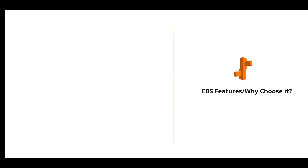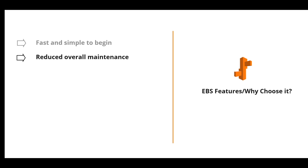Why use Elastic Beanstalk, or what are its features? First, it's fast and simple to begin — it's the fastest way to deploy your application on AWS. You simply use the AWS Management Console, a Git repository where your application code resides, or an IDE like Eclipse or Visual Studio Code to upload your application. Beanstalk automatically handles the deployment details and within minutes your application will be ready to use without any infrastructure configuration. It also provides reduced overall maintenance as you are not focused on the underlying infrastructure.